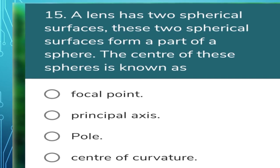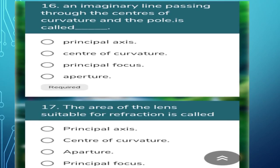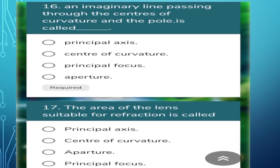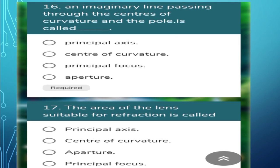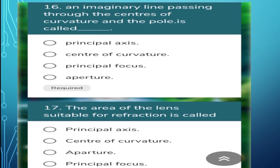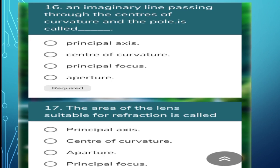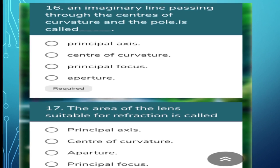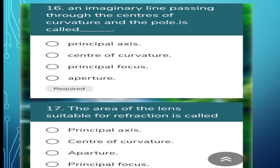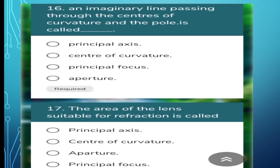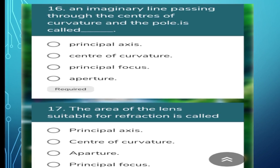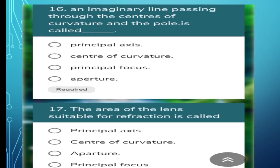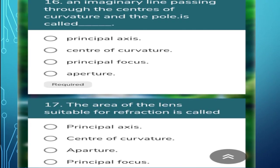Next question: an imaginary line passing through the center of curvature and the pole is called? This imaginary line is called the principal axis. This is important — when drawing ray diagrams, the first ray is drawn parallel to the principal axis. So the answer is principal axis.